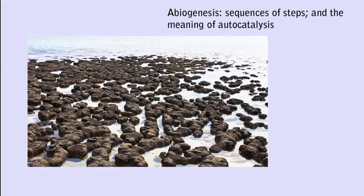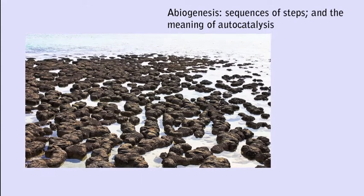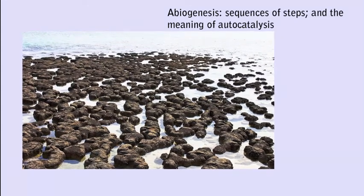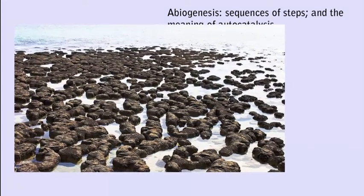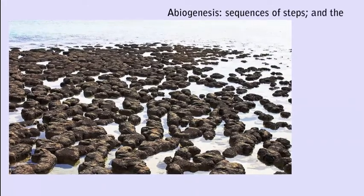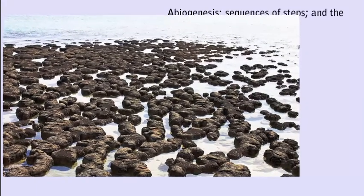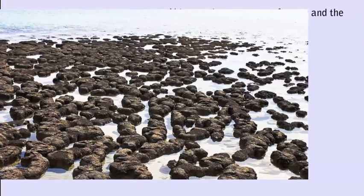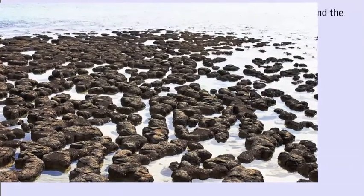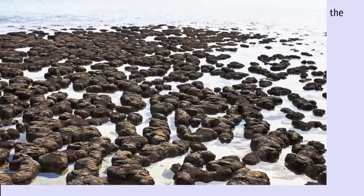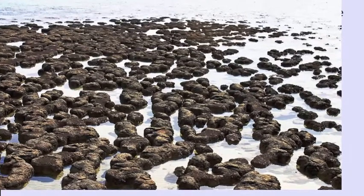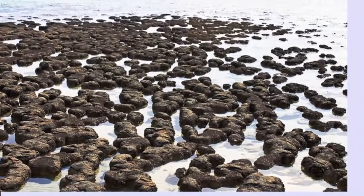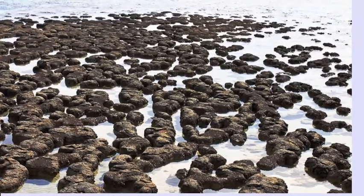On a part of the crust now occupied by Australia, prokaryotic life that formed bacterial mats got preserved as stromatolites, and somehow these never got destroyed over the time since, with the turnover of crust caused by the movement of plates.